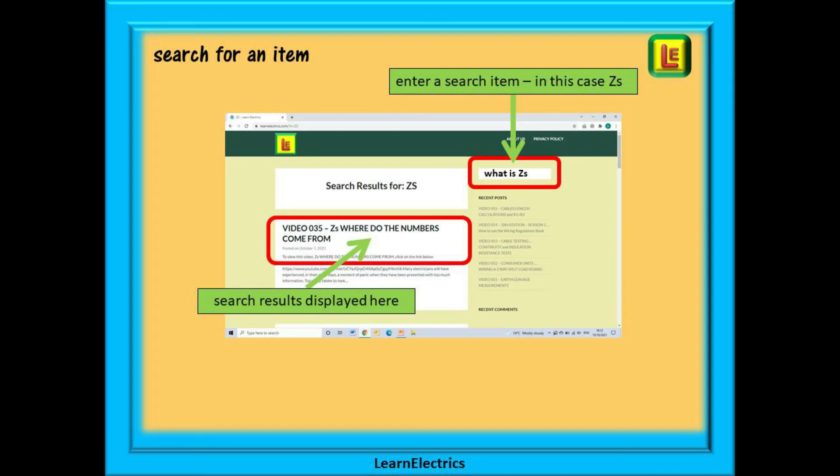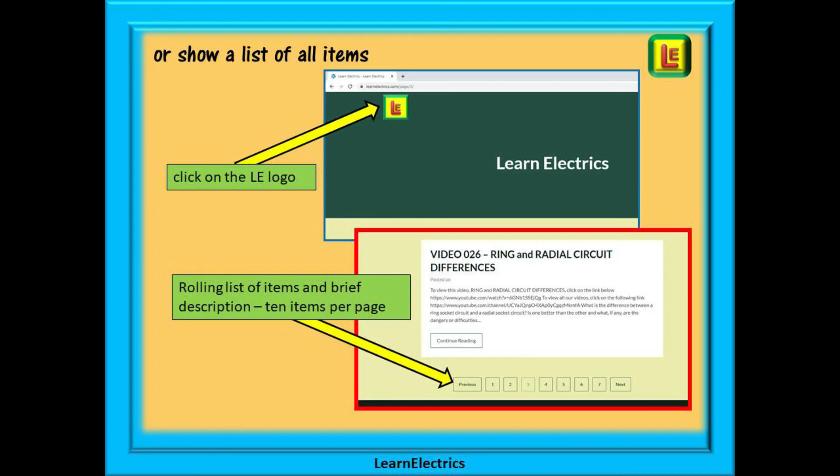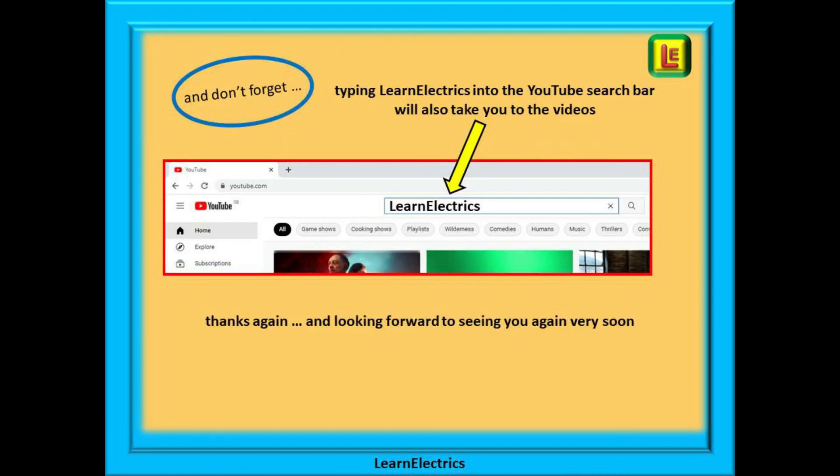Each video listed will have a link shown that will take you directly to that exact YouTube video. Or you can browse through a list of all the available items and videos. To do this, click on the LE logo on the left of the home page and all of our items and videos will be shown. There will be ten items shown on each page, and at the bottom of each page is a page selector: page two, three, four, etc. that will bring up the next ten items or videos in the list. And don't forget that you can also type in learnelectrics or one word into the YouTube search bar to go directly to our channel at any time from any computer. We are constantly adding new videos to our channel. Don't miss the next one. Once again, thanks for watching and we hope to see you again very soon.